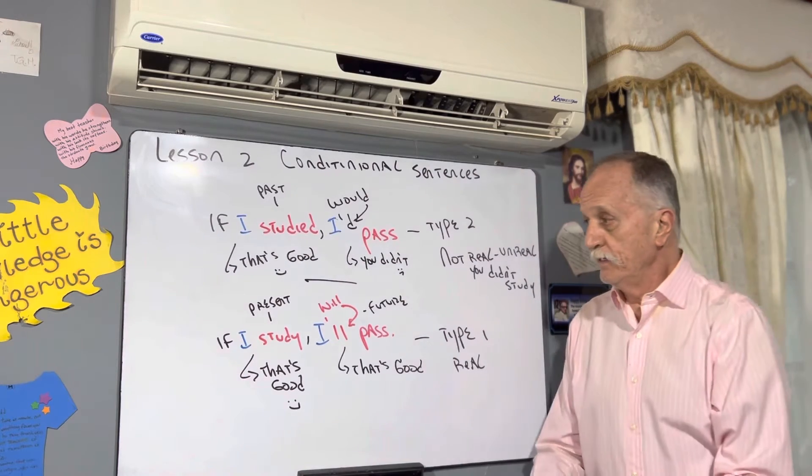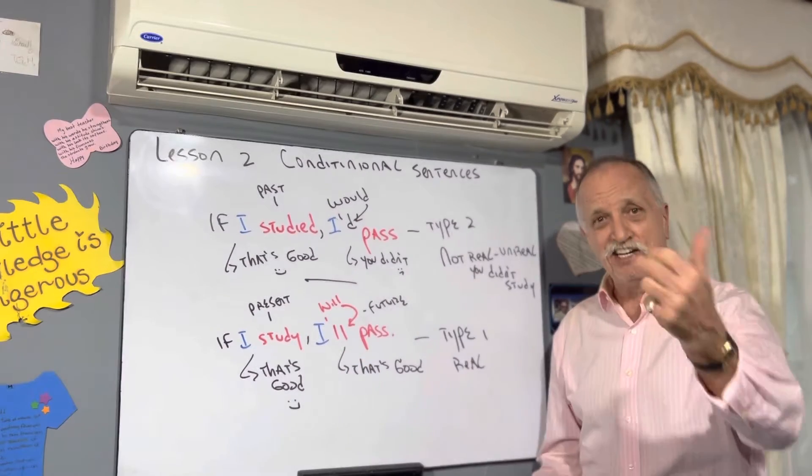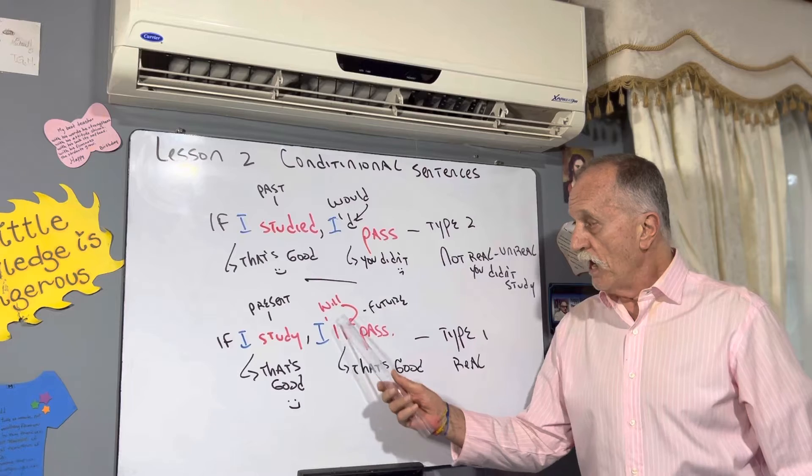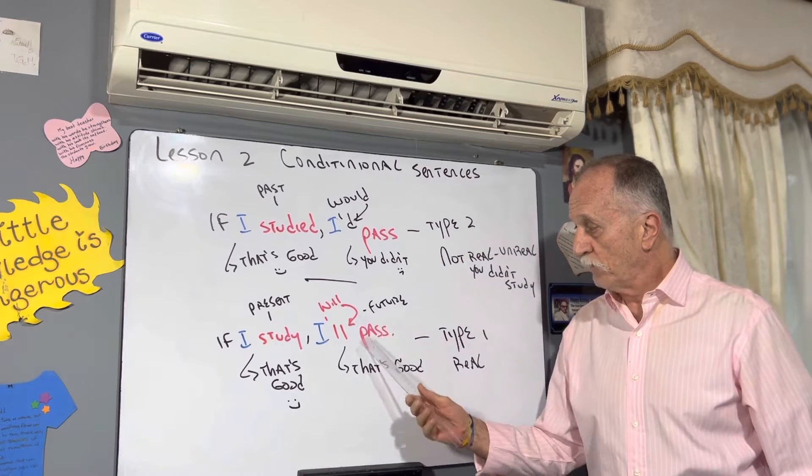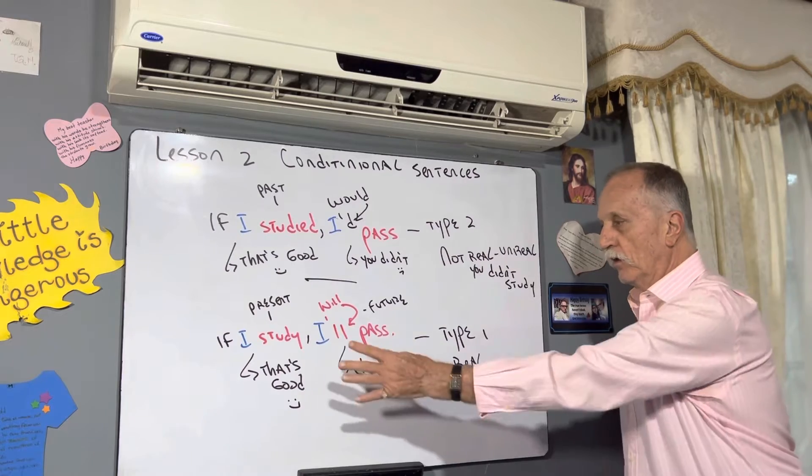Lesson one review: If subjects study in present - if I study, that's good. If you study, that's good. Comma. I will pass - will in the future, that's good too. Type one is real. Two goods.